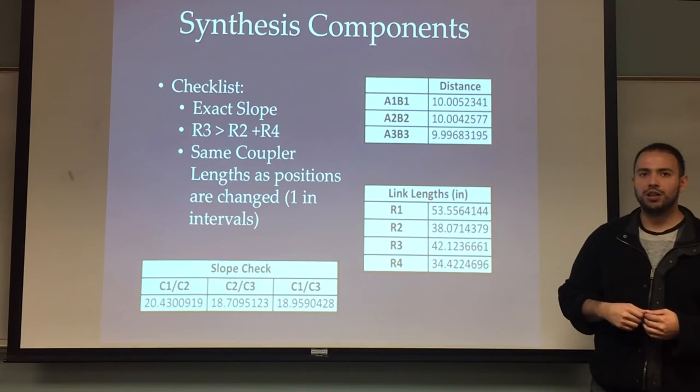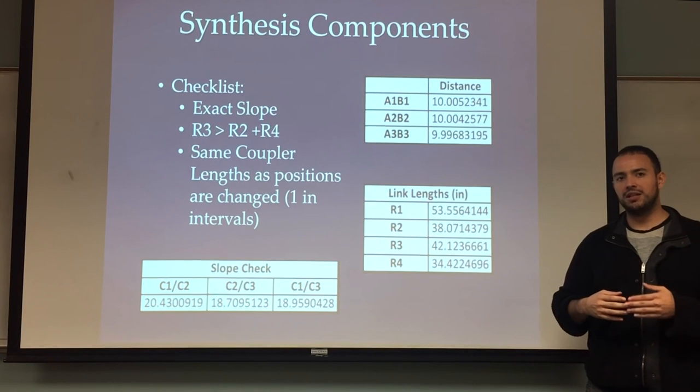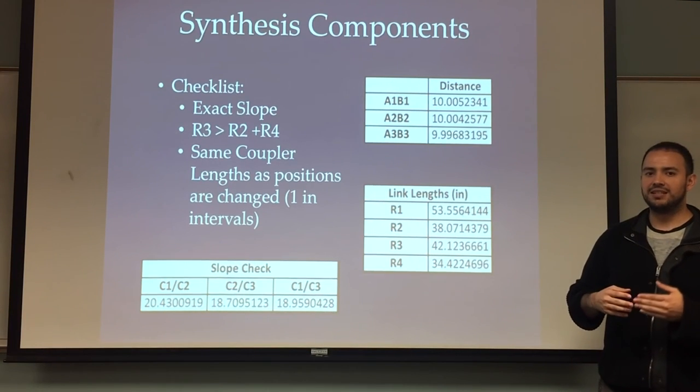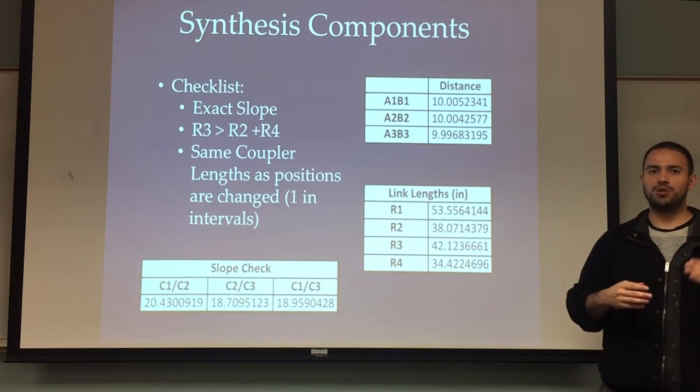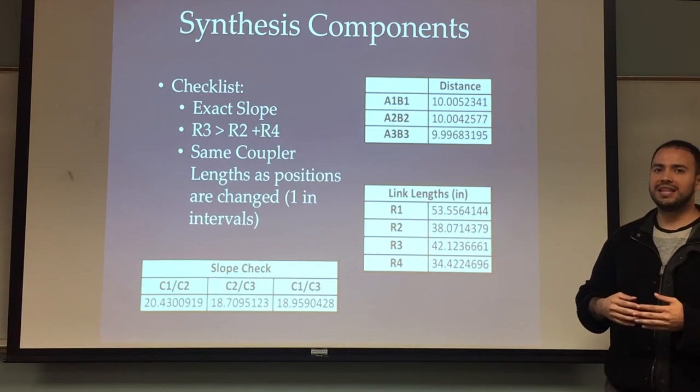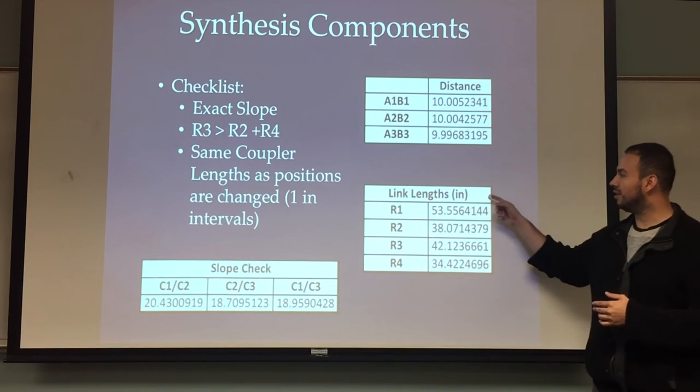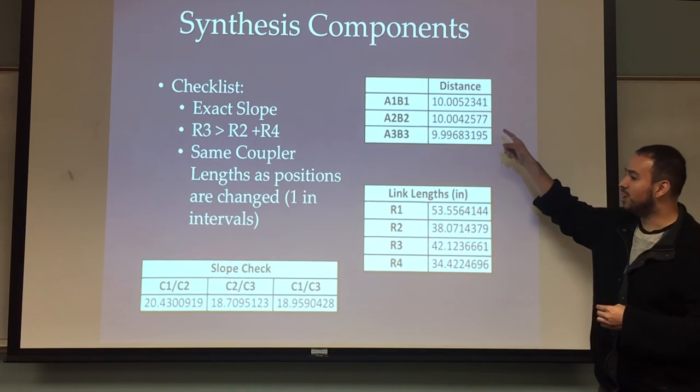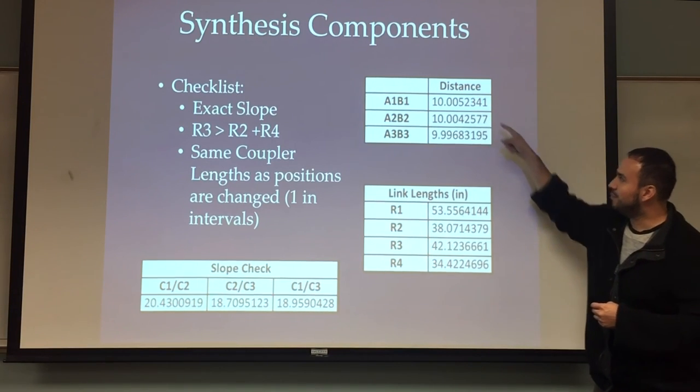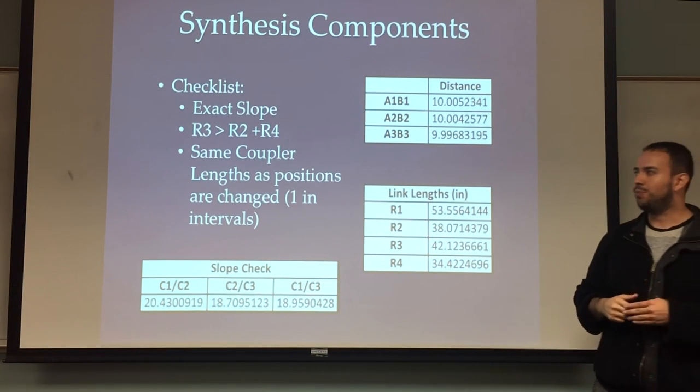And we have to have the same coupler lengths. One of the keys to this project was, after we synthesized it, to have the coupler pass through the specified points. In order for this to happen, we need to make sure that the link, the distances A1 and B1, are going to be pretty much the exact same distance. Otherwise, they're not going to pass through these points.